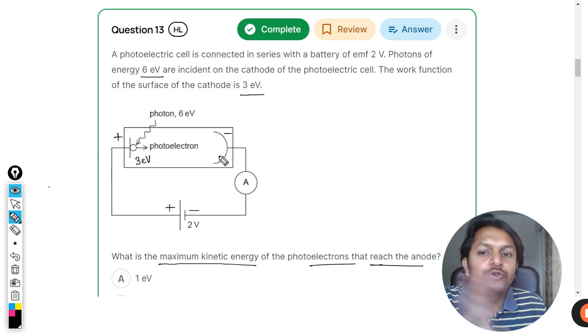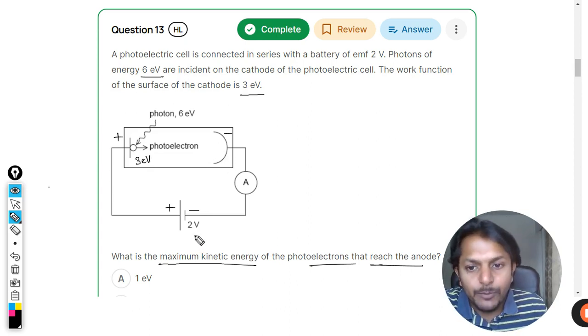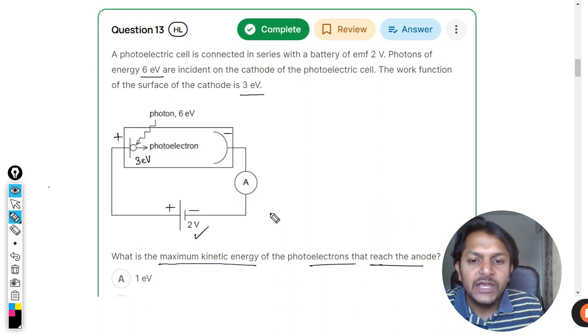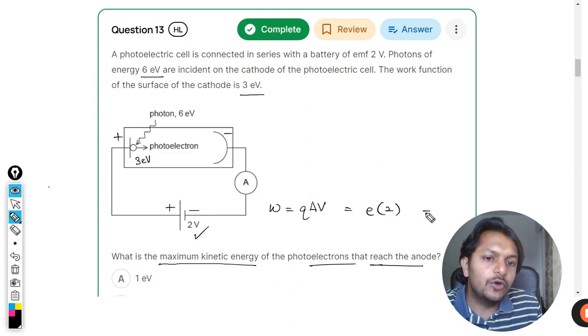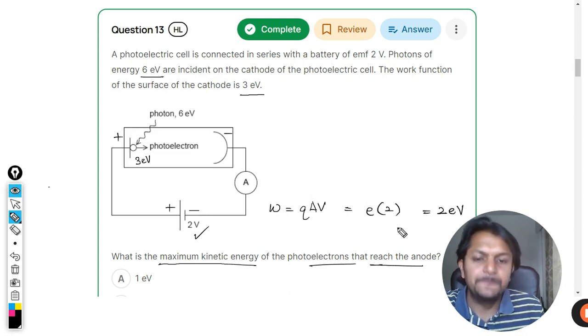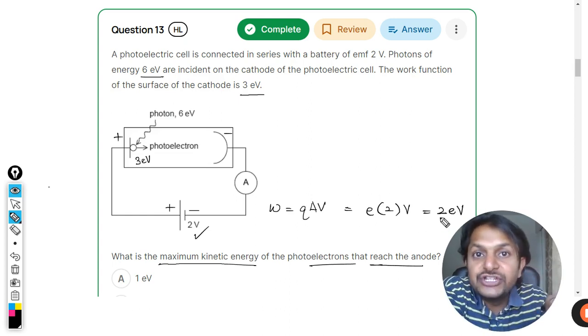It will be losing some energy. What will be the loss of energy? Stopping potential is 2, so clearly the work done against this stopping potential—q equals delta V—will be given by e times 2. It is only 2 eV in terms of voltage, 2 eV energy that has to be wasted.